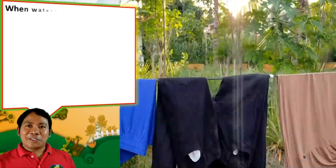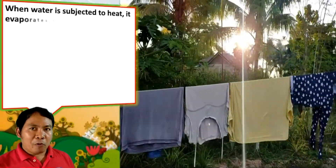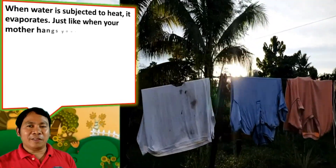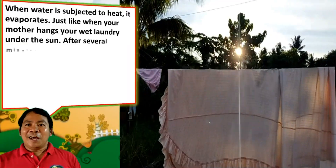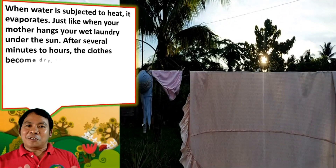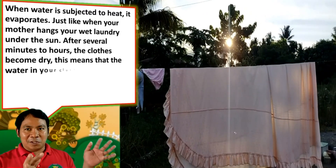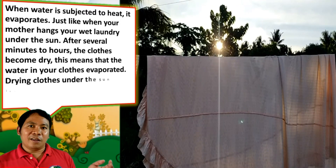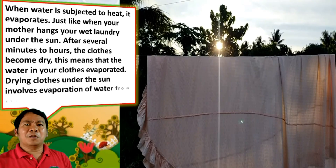When water is subjected to heat, it evaporates — just like when your mother hangs wet laundry under the sun. The clothes become dry, which means the water in the clothes evaporated. Drying clothes under the sun involves evaporation of water from the clothes.